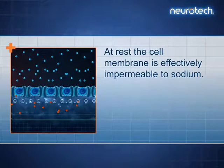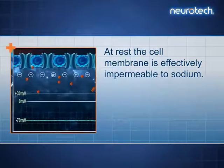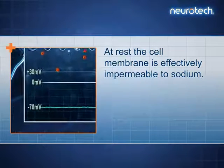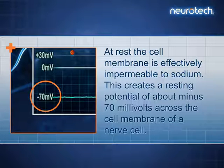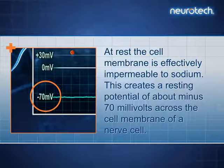At rest, the cell membrane is effectively impermeable to sodium. This creates a resting potential of about minus 70 millivolts across the cell membrane of a nerve cell.